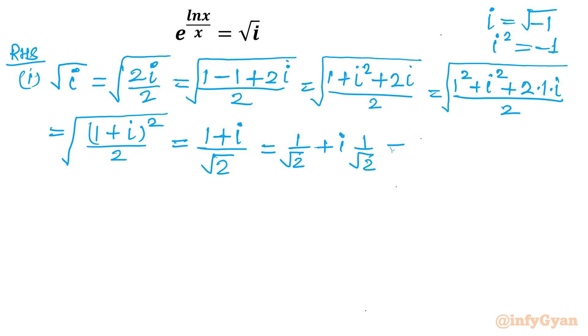Now come to split the real and imaginary part. So I will write 1 over root 2 plus i times 1 over root 2. Now 1 over root 2 is familiar. It is cos pi by 4 and sin pi by 4. So let me write cos pi by 4 plus i sin pi by 4. This is our RHS.